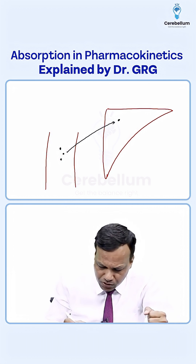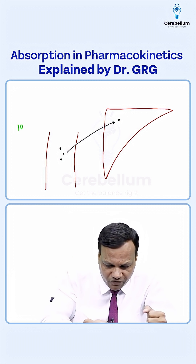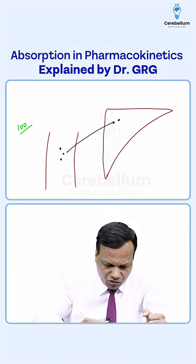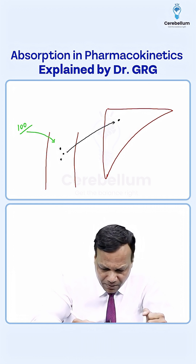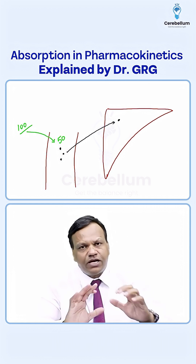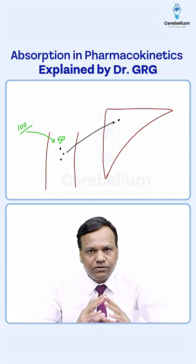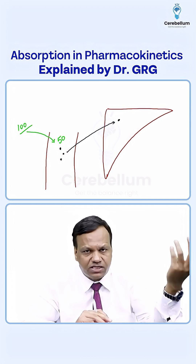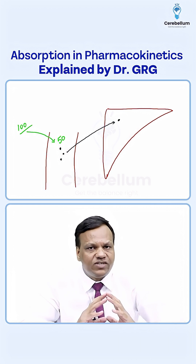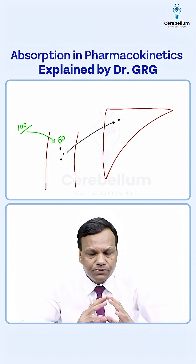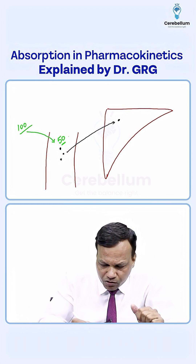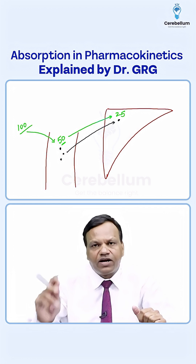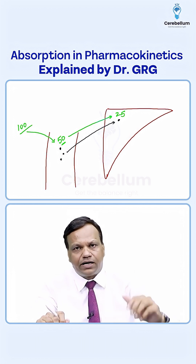Suppose we give 100 molecules of a drug by oral route. Out of that, the drug has 50% bioavailability, so 50 molecules have reached the systemic circulation. The rest of the 50 are wasted, either by first-pass metabolism or because they were not absorbed. Out of these 50 molecules, suppose 25 molecules go into different tissues like liver, kidney, heart, and brain.